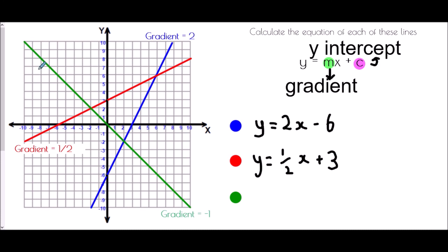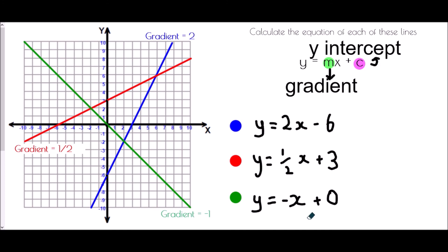For the green line, the gradient is negative one. In algebra we don't write negative one x — we just write negative x. The line crosses the y-axis at the origin, giving a y-intercept of zero. Since adding zero makes no difference, the equation is simply y equals negative x.